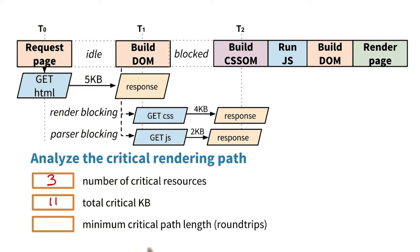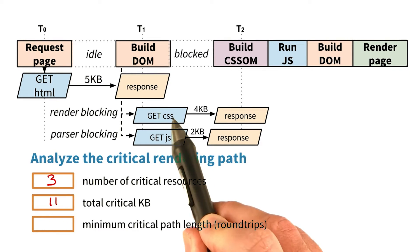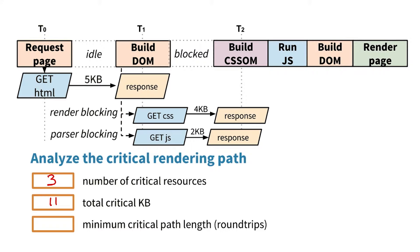And then minimum critical path length, or round trips — is it going to be two or three? Can the browser download both the CSS and JavaScript in parallel? It's two; the browser can download both files in parallel. Note that the number of critical resources and the total number of kilobytes has increased, but the critical path length stayed the same.